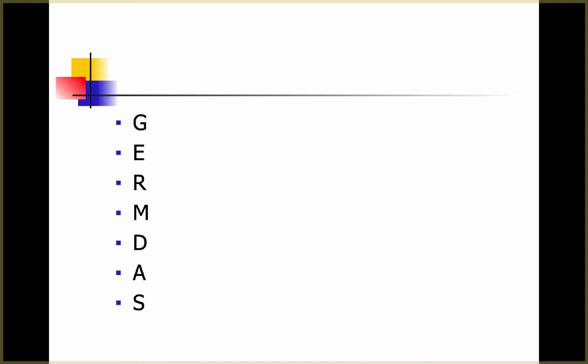First we're going to learn a mnemonic that might help you remember how to do order of operations. In the past, you've seen PEMDAS, which is what you're probably used to. I'm going to add to it a little bit. What we have here is GERMDOS, because with PEMDAS the P just stands for parentheses, but as we go forward in algebra we're going to use all sorts of different grouping symbols. So instead I'm using GERMDOS because G is for grouping symbols.